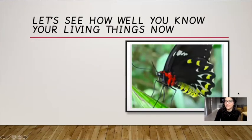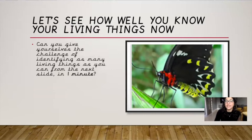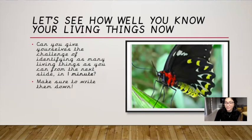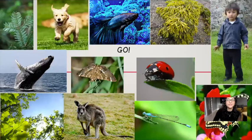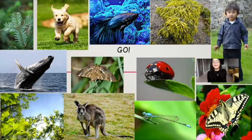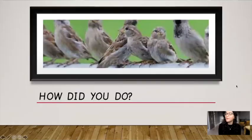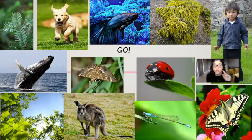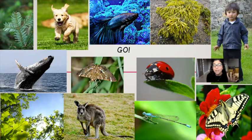Now let's see how well you know your living things. Can you give yourselves the challenge of identifying as many living things as you can from the next slide in one minute? Make sure to write them down — on your marks, get set, go! Pause this video, time yourself for a minute, and name as many living things as you can. So how did you do? You can see there are some we should know off the bat — a little child which would be a human, a puppy or a dog, a ladybird — lots of different living things we can identify quite easily, but there are a couple that might take you a bit of time.